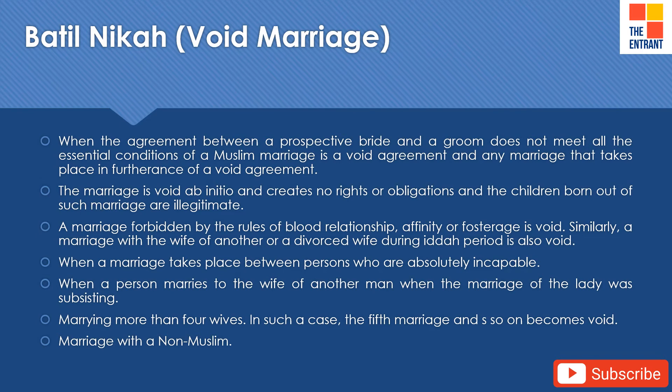When a marriage takes place between persons who are absolutely incapable of providing valid consent, or when a person marries the wife of another man while that marriage was subsisting, or when marrying more than four wives — in such a case the fifth marriage and so on becomes void — and a marriage with a non-Muslim is also considered to be a void marriage.